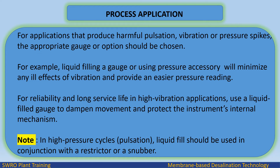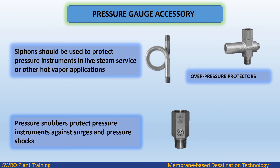Process application: For applications that produce harmful pulsation, vibration, or pressure spikes, the appropriate gauge or option should be chosen. Liquid filling a gauge or using a pressure accessory minimizes ill effects of vibration and provides easier pressure reading. For reliability and long service life in high vibration applications, use a liquid filled gauge to dampen movement and protect the instrument's internal mechanism. Siphons should be used for live steam or hot vapor applications. Over-pressure protectors protect the gauge against exceeding process pressure, and pressure snubbers protect against surges and pressure shocks.